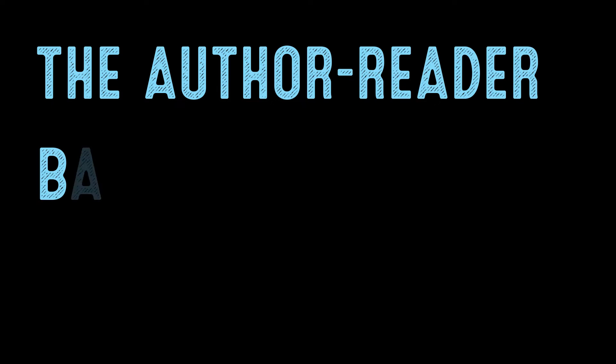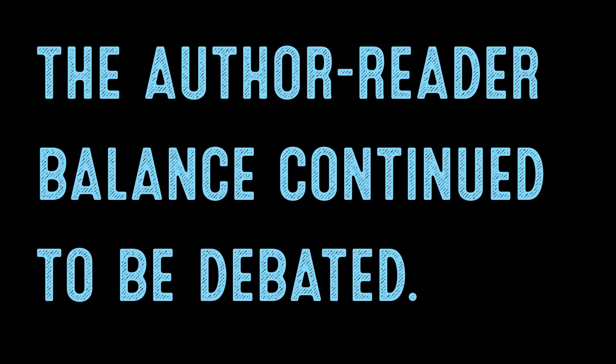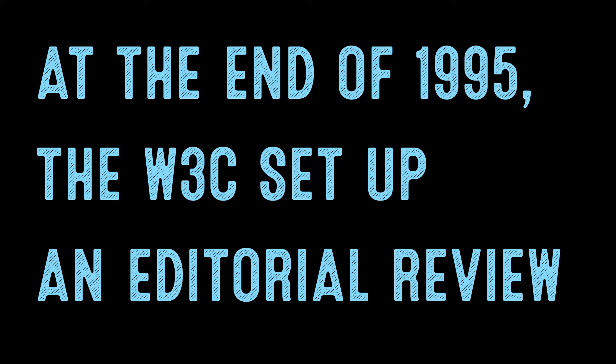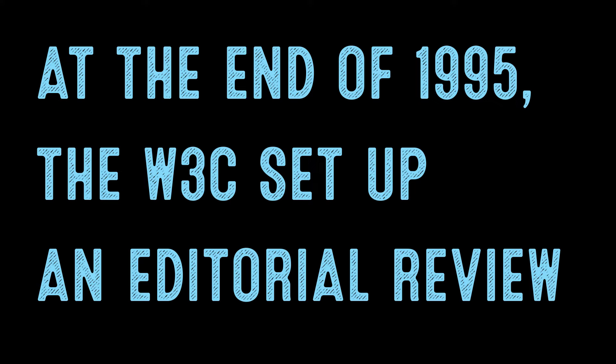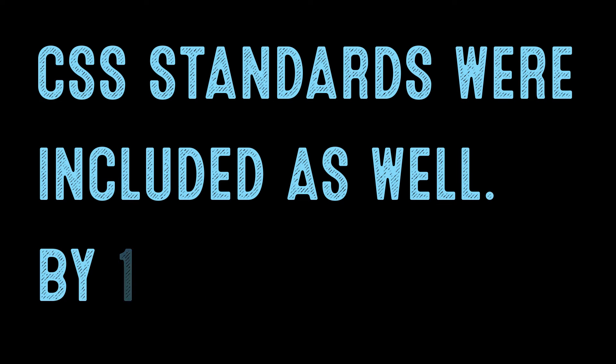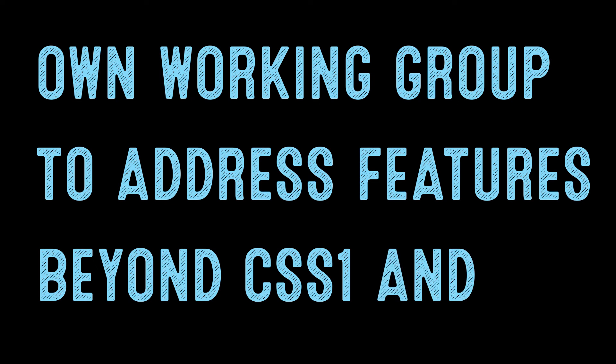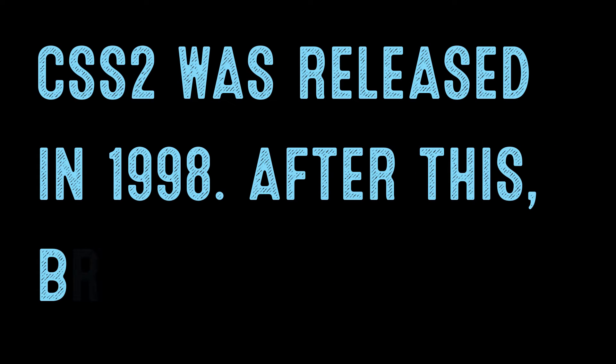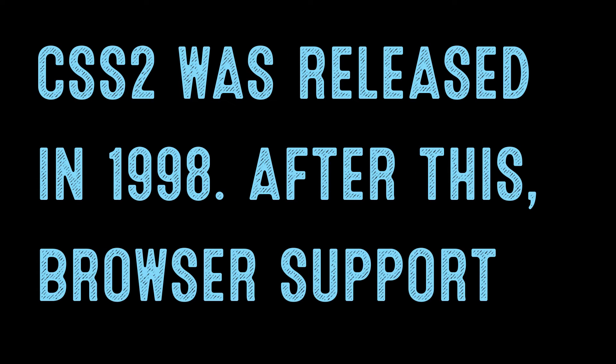The author-reader balance continued to be debated. At the end of 1995, the W3C set up an editorial review board to ratify future HTML standards, and CSS standards were included as well. By 1997, CSS had its own working group to address features beyond CSS1, and CSS2 was released in 1998.